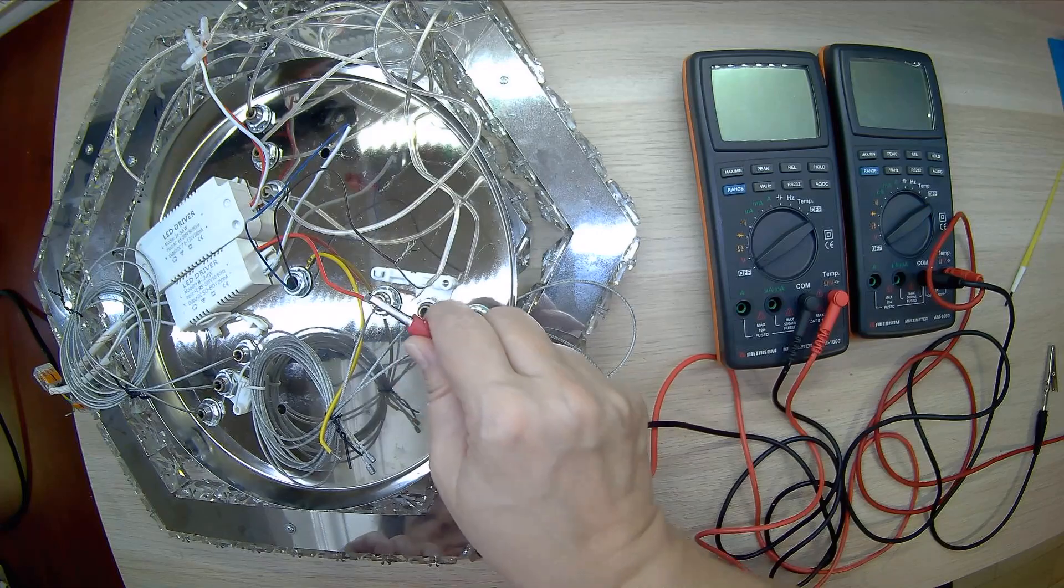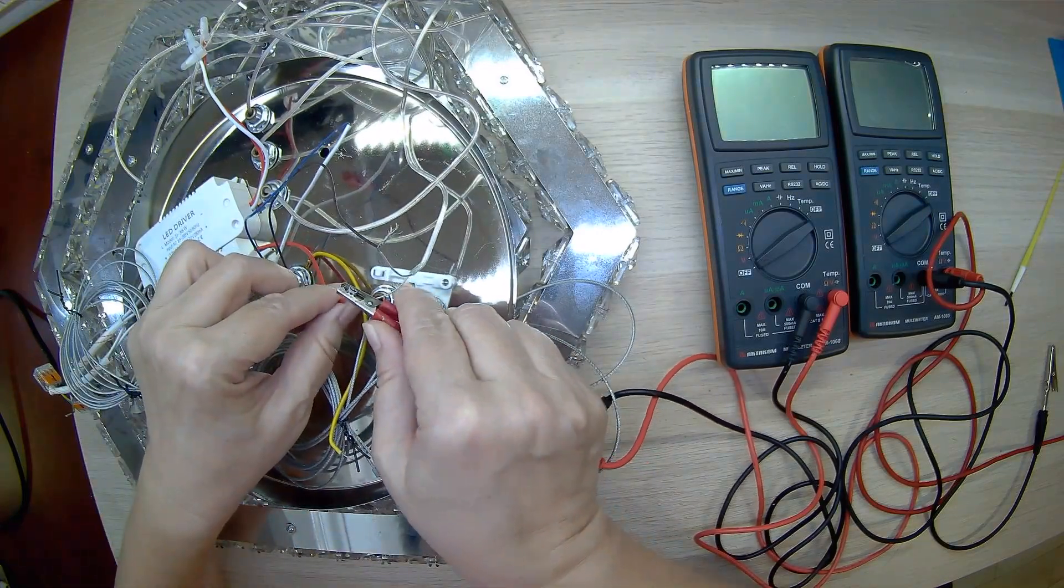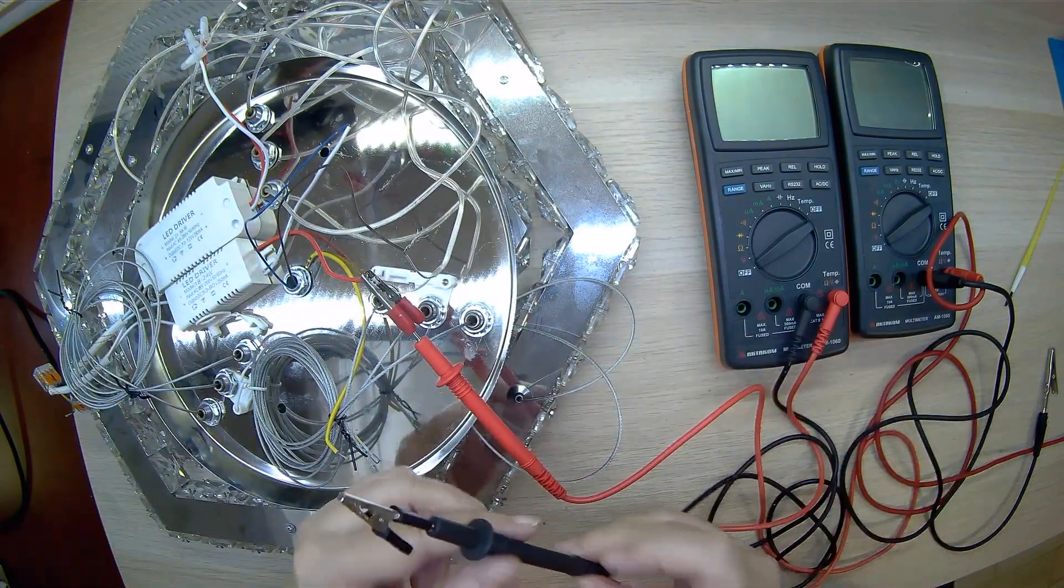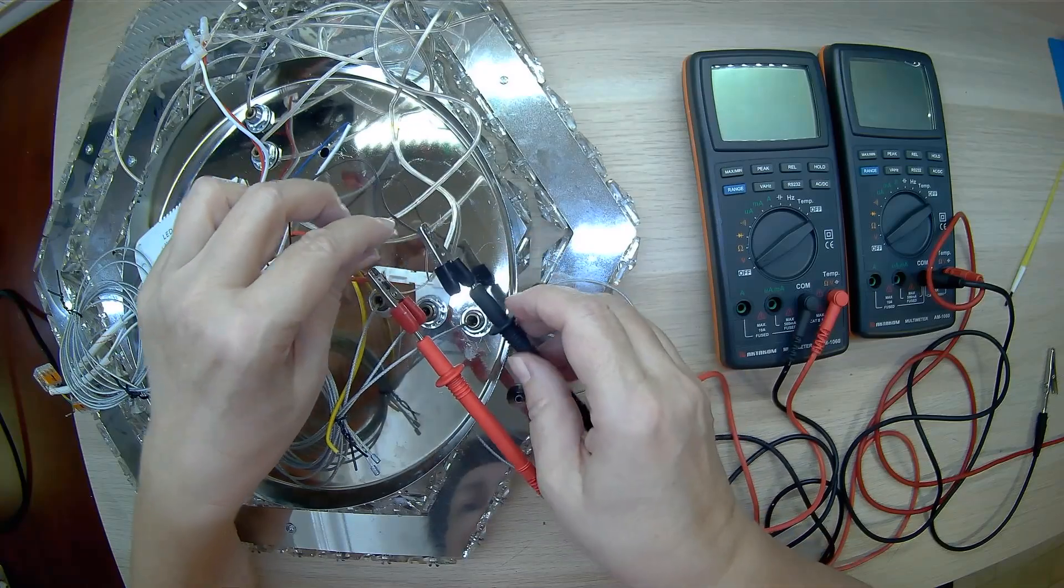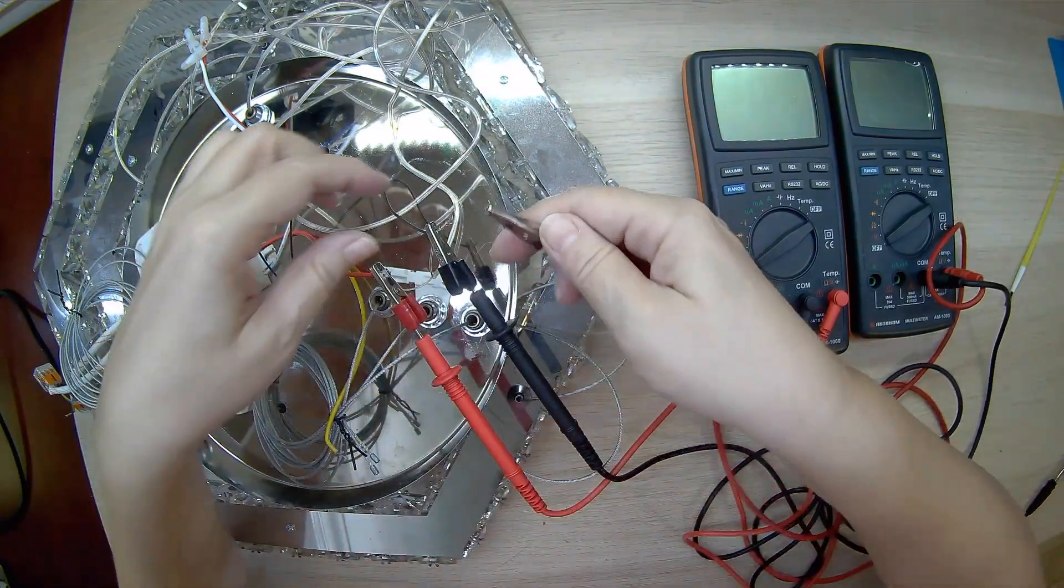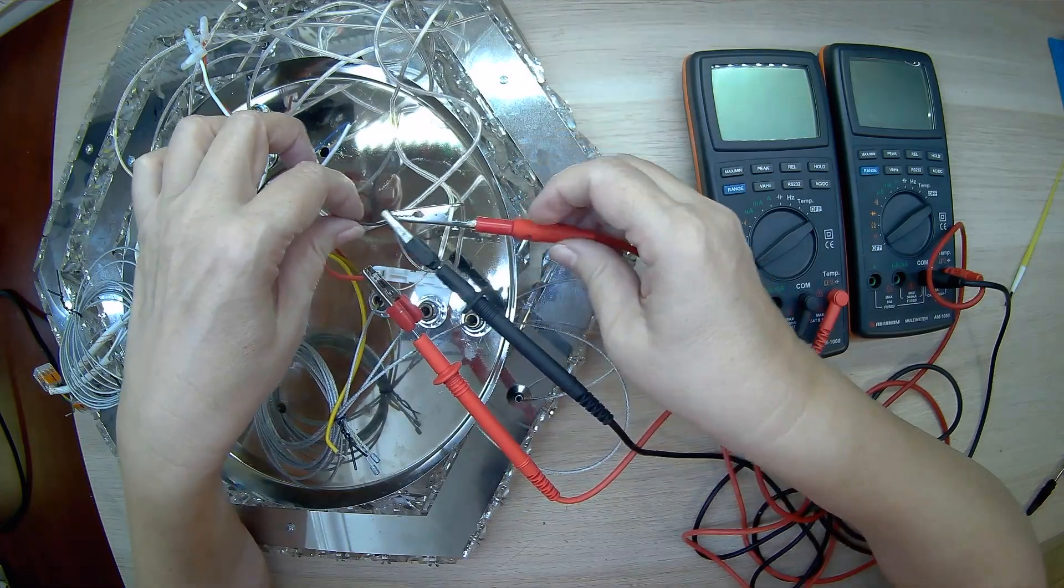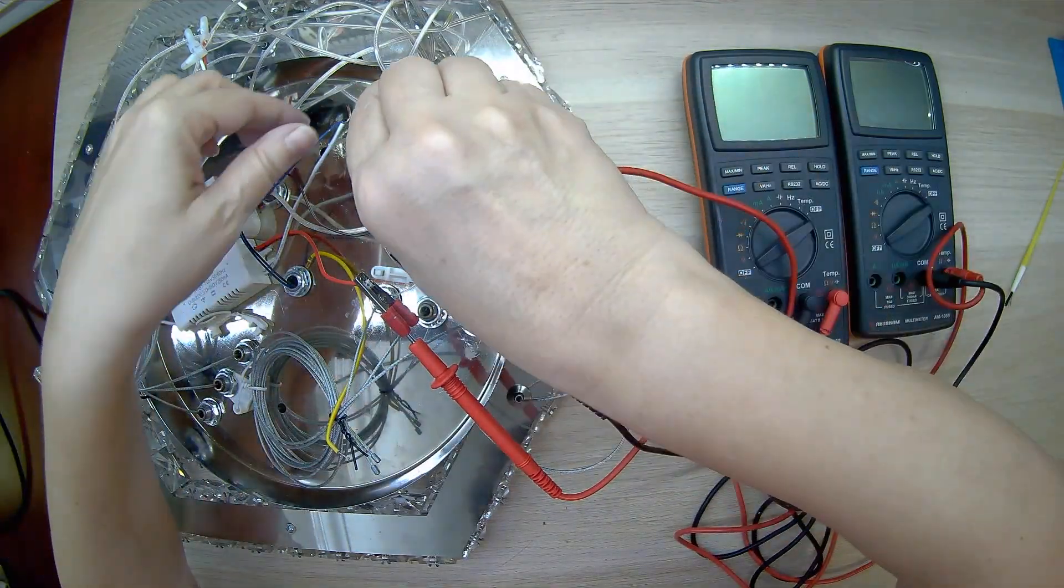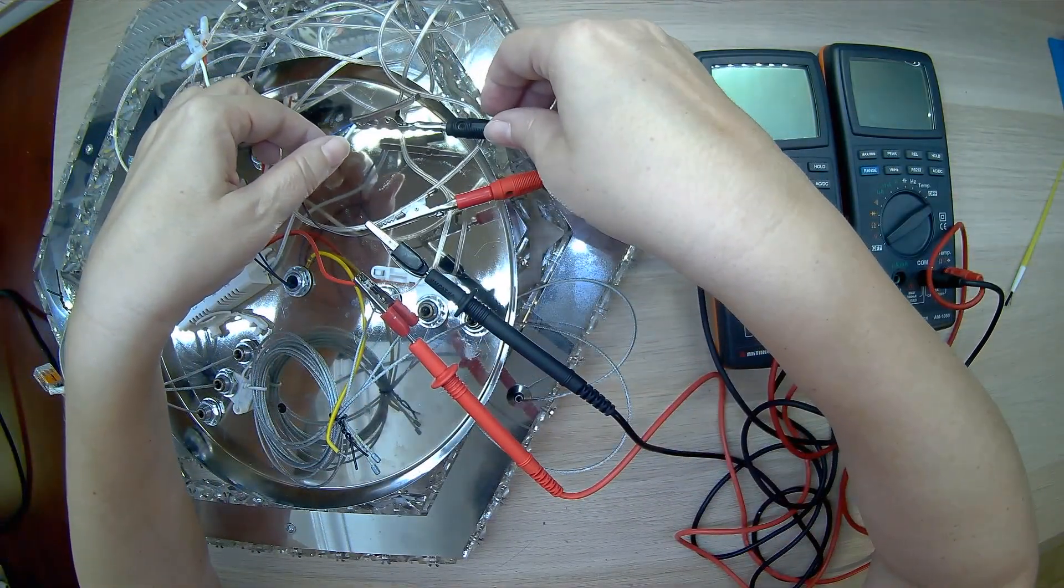Now, let's test the chandelier with the new LED ring. For control, we will connect two AM1060 multimeters at once. One AM1060 is parallel to the middle section of the chandelier and the second is parallel to the LED ring. Let's turn it on.